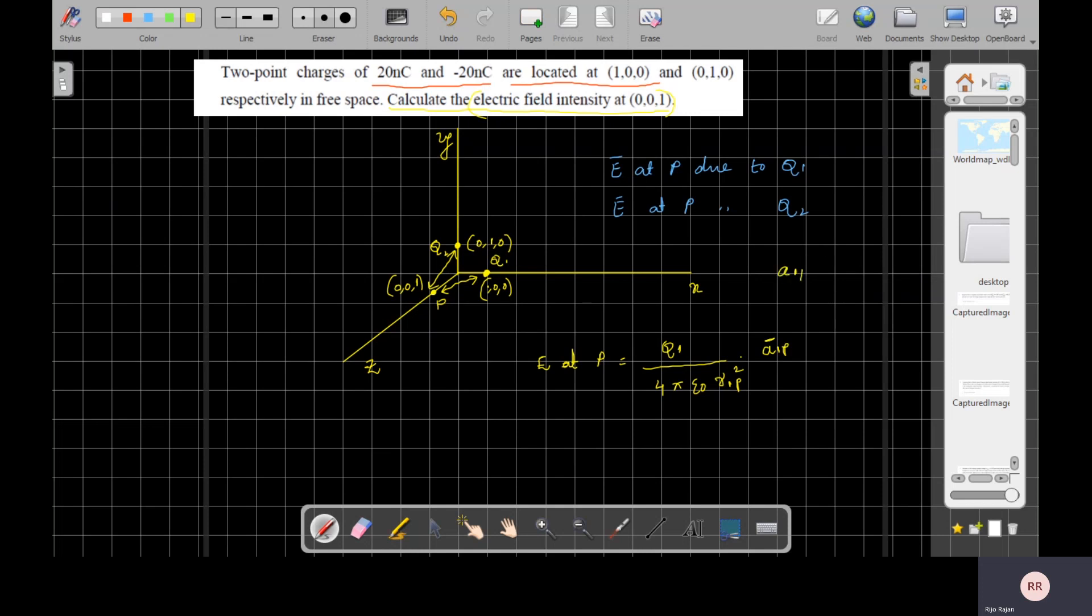So how do you find A1P? It is very easy to find A1P. What is the point at Q? That is 1Ax plus 0Ay minus 0Az. So A1P is the vector. What is the coordinate of Q1? That is 1Ax plus 0Ay plus 0Az. What is the coordinate of P? (0,0,1), that is 0Ax, 0Ay plus 1Az.